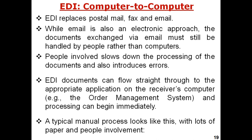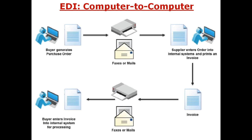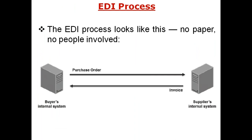Instead of a human being, we place one software. That is the part of EDI — instead of human beings, we place software in their place. As shown in the buyer's diagram, the buyer generates a purchase order, then faxes or emails it, and the supplier receives it, enters the order into internal systems, prints an invoice, and sends it back via fax or email. Then the buyer enters the invoice into the internal system for processing — this is computer-to-computer.